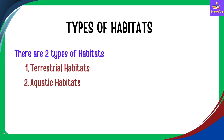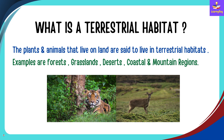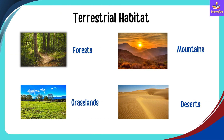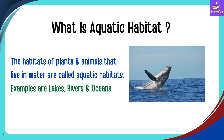There are two types of habitats: terrestrial habitats and aquatic habitats. The plants and animals that live on land are said to live in terrestrial habitats. Examples of terrestrial habitats are forests, grasslands, deserts, coastal regions, and mountain regions.